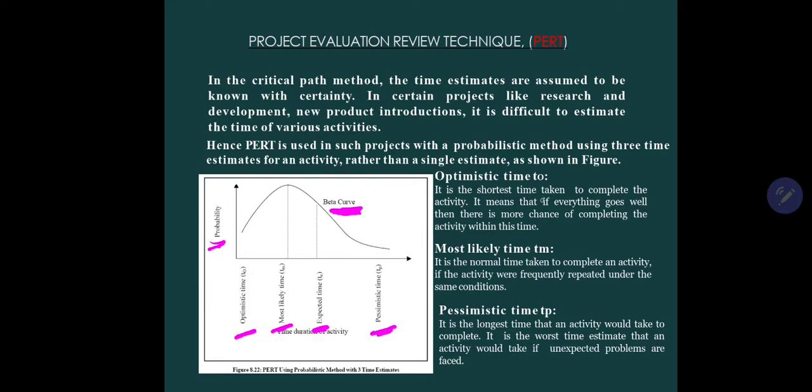So what is optimistic time? It is represented by T0. It is the shortest time taken to complete the activity. It means that if everything goes well, then there is more chance of completing the activity within this time.